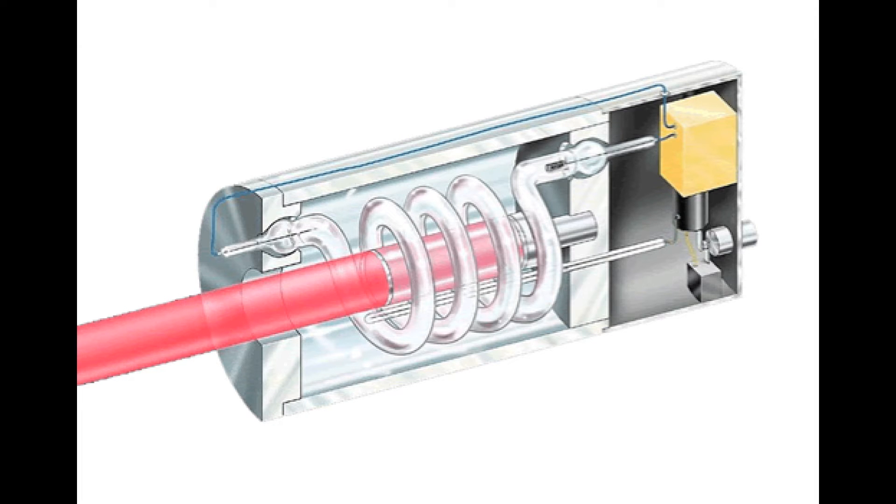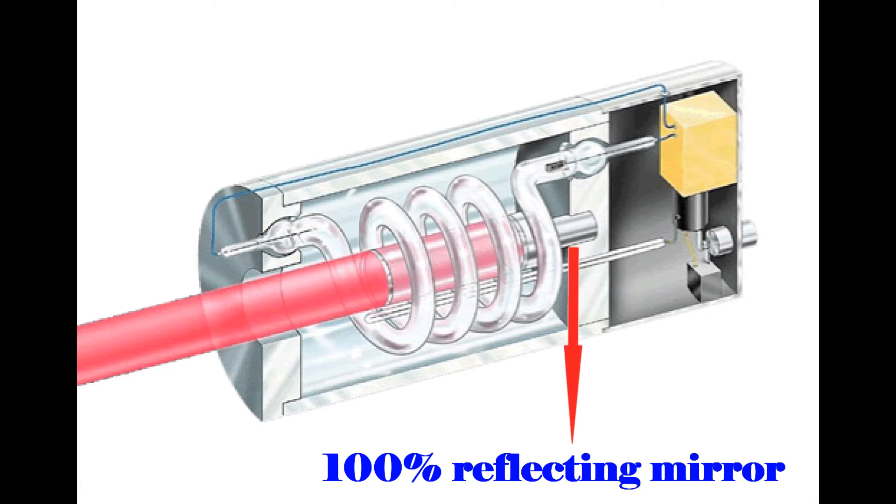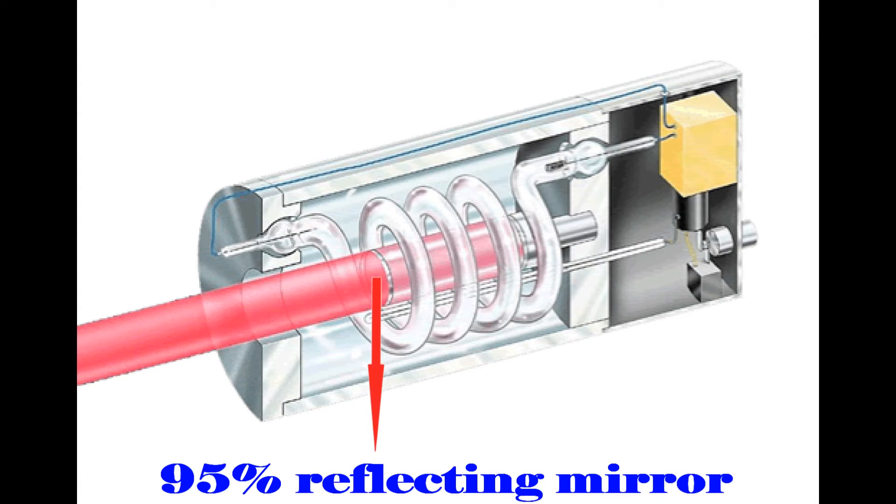The components of the ruby laser are ruby crystal, flash lamp, power supply, 100% reflecting mirror, and 95% reflecting mirror.